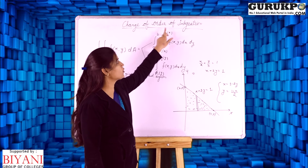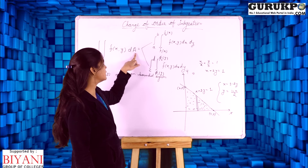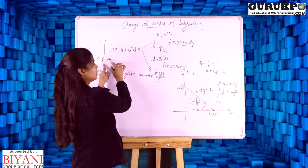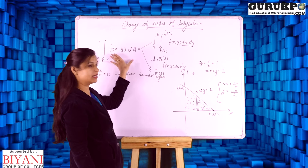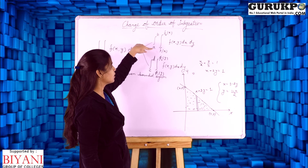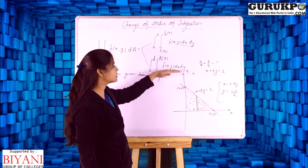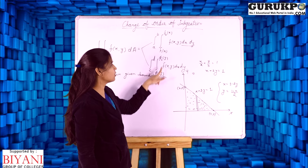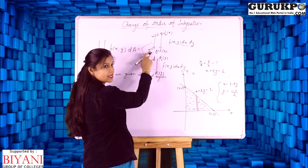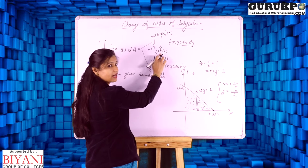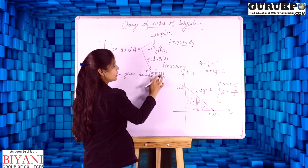Change of order of integration in double integration means this is double integration of f(x,y) dA, where dA means dx dy — so for double integration there are 2 variables: x and y. There are 2 methods to integrate it. In the first method, the outer limits are of y: a to b, and the inner limits are f₁(x) to f₂(x). In the second method, the outer limits are c to d, and the inner limits are φ₁(y) to φ₂(y). In the first method, constant limits are of x and variable limits are of y; in the second method, constant limits are of y and variable limits are of x.